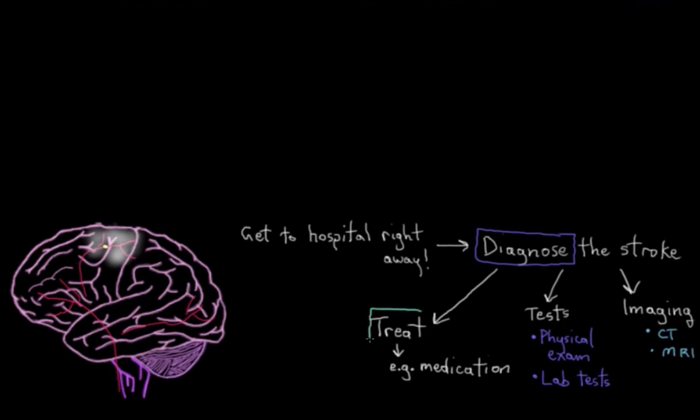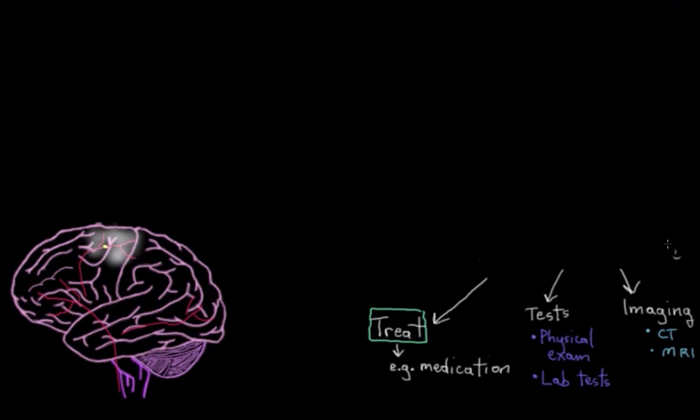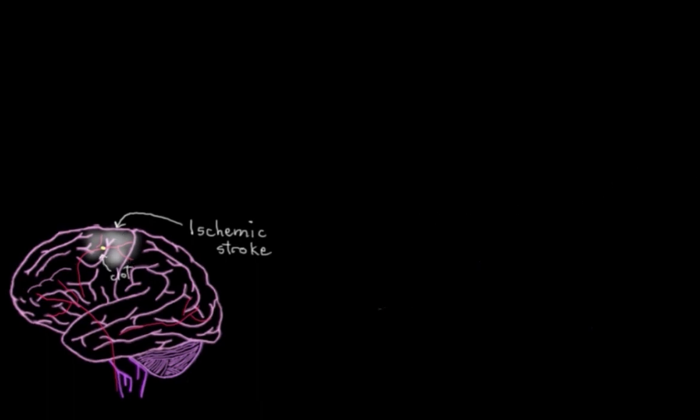So the kind of treatment that the person gets really depends on the type of stroke that they had. So let me show you what I mean here. You could have had an ischemic stroke, for example, where a clot blocks off a bit of blood vessel in the brain and causes a stroke that way.